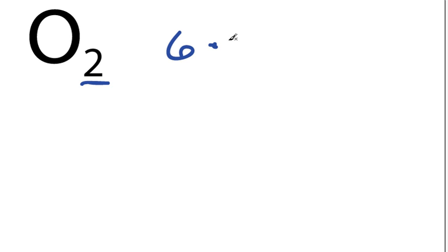But we have 2 of them. So we'll multiply that by 2, and that gives us a total of 12 valence electrons.